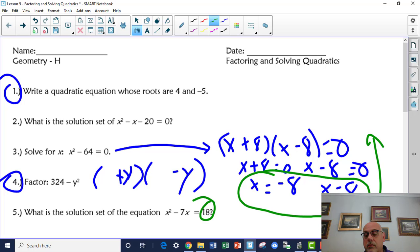Quadratics have to be equal to 0, so you got to move the 18 over. There is a lot of review problems on here. Different kinds of factoring and all of those. Work on those.